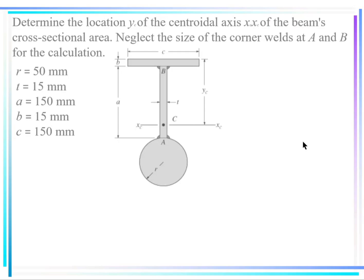Remember: take this top area multiplied by its centroid distance from the axis, plus this area multiplied by its center distance from this line, plus this area multiplied by its center distance from this line, divided by the total area. That will give you your YC.